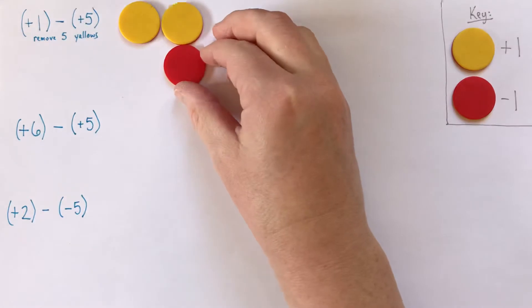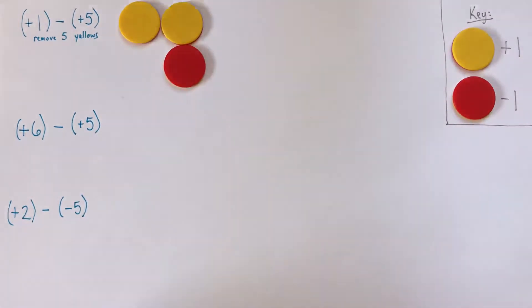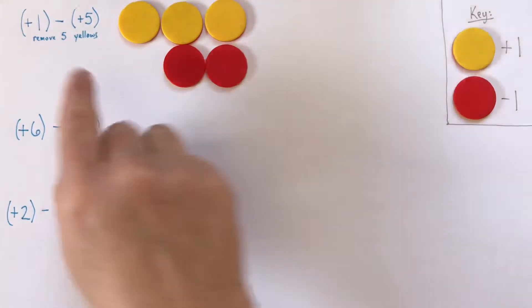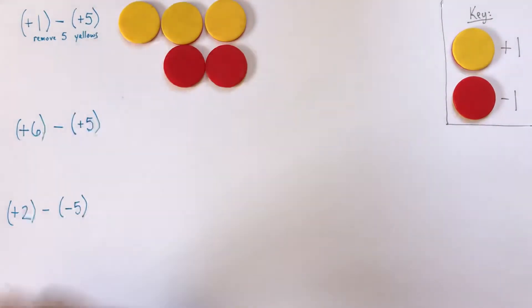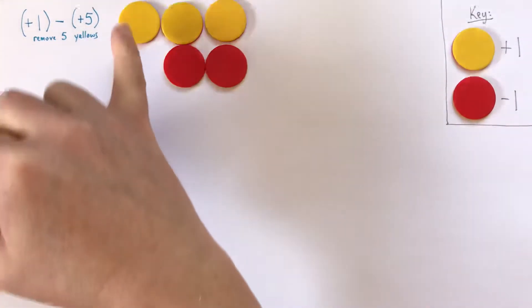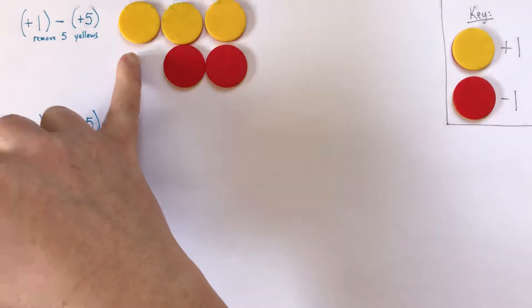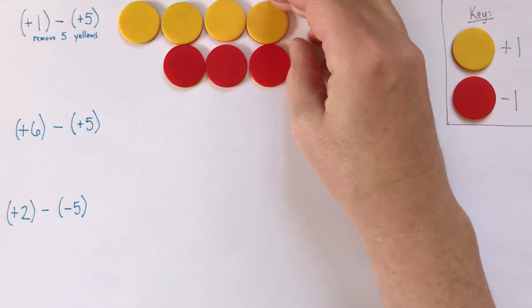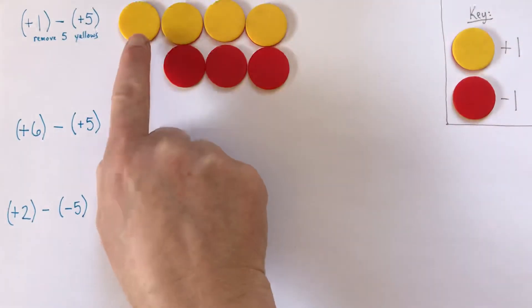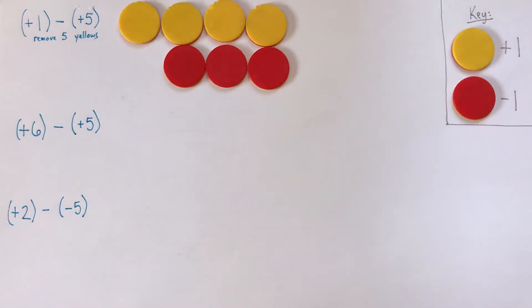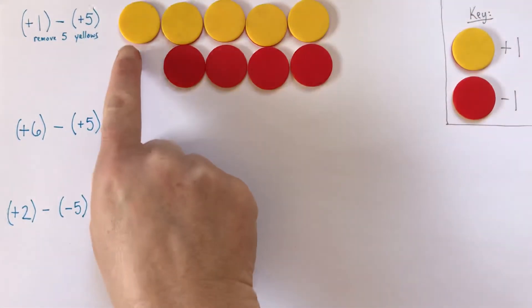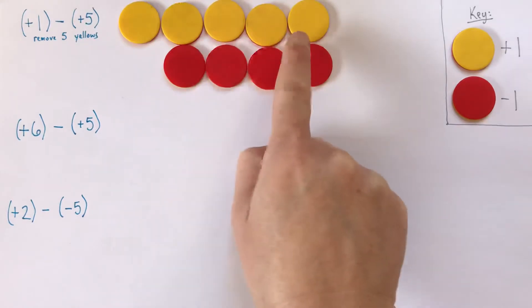So if I add a zero pair to here, this is still positive 1. And as you do this, say to yourself, still positive 1, and you can go back and check. Do I have enough yellows to remove yet? Nope. Not enough. I need five. I only have three yellows. Although it's still positive 1. It's not positive 3. It's just positive 1, because all this is zero. I've still got... It's positive 1. I don't have quite enough yellows yet. That is still positive 1, and now I do have enough yellows.